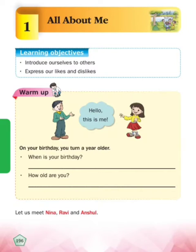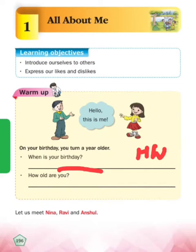We will do the warm-up exercise here. Hello, this is me - hello, yeh main hun. On your birthday, you turn a year older - apne bade pe aap, aap ek saal aur bade ho jaoge. When is your birthday? This is your homework - you have to write your date of birth, aapko apne date and month and year likhna hai.